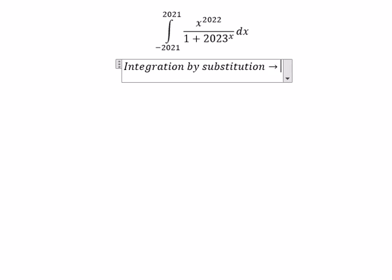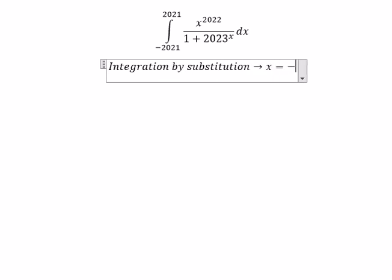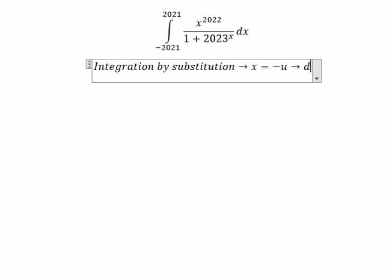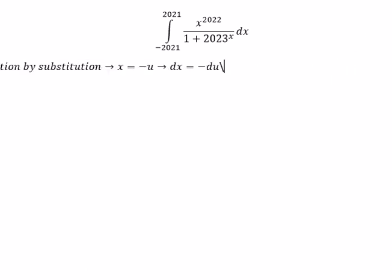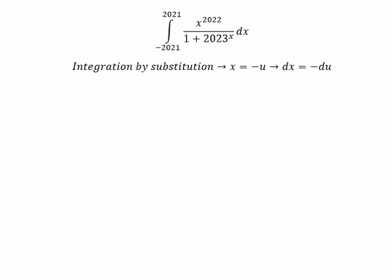We put x equal to negative u. So ds is equal to negative du. Next, we need to change the bounds in here.